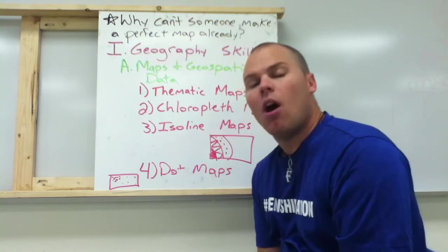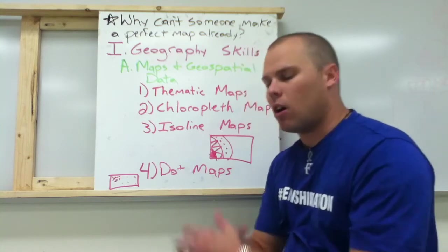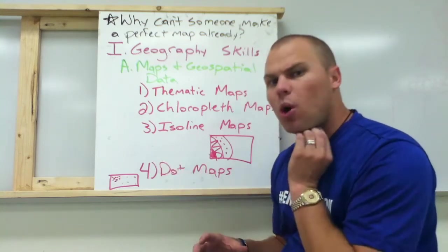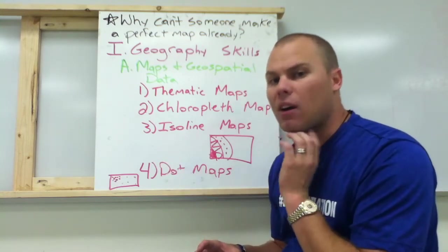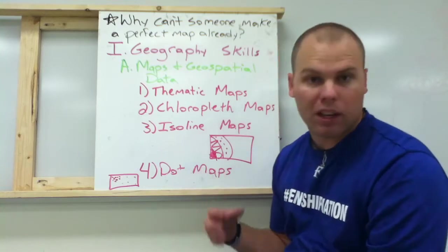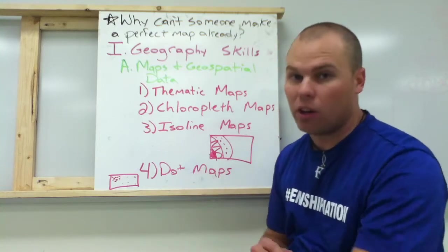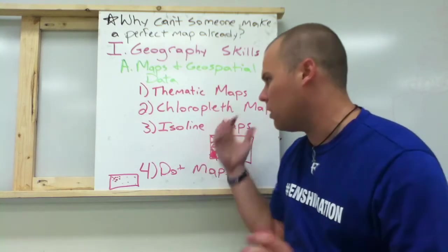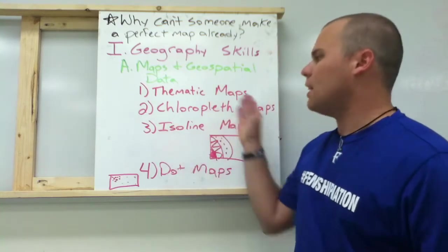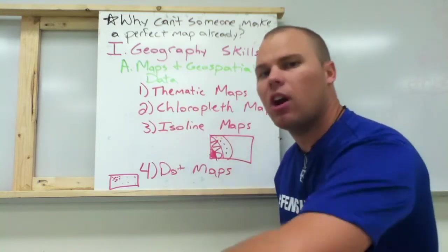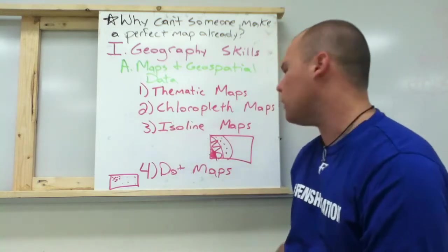Then there are choropleth maps. These maps are displayed in color. Maybe they're showing you voting patterns — you've got Democrats and Republicans, different colors with red and blue and maybe green. That's showing you data through different colors visually.